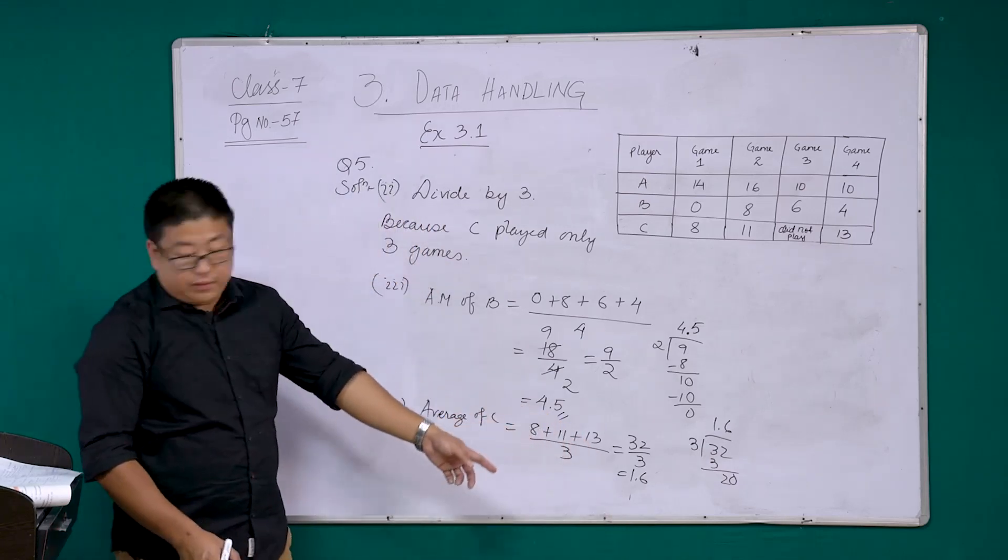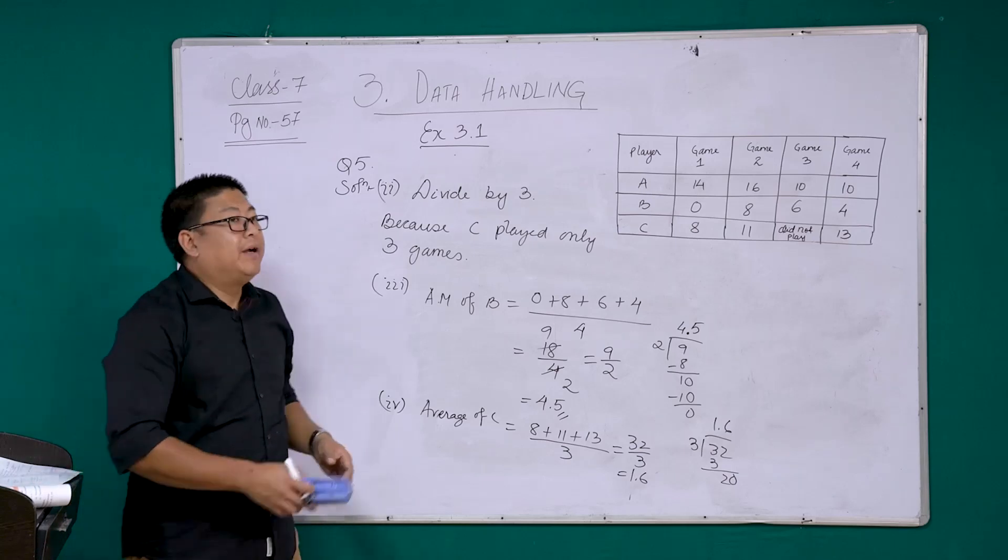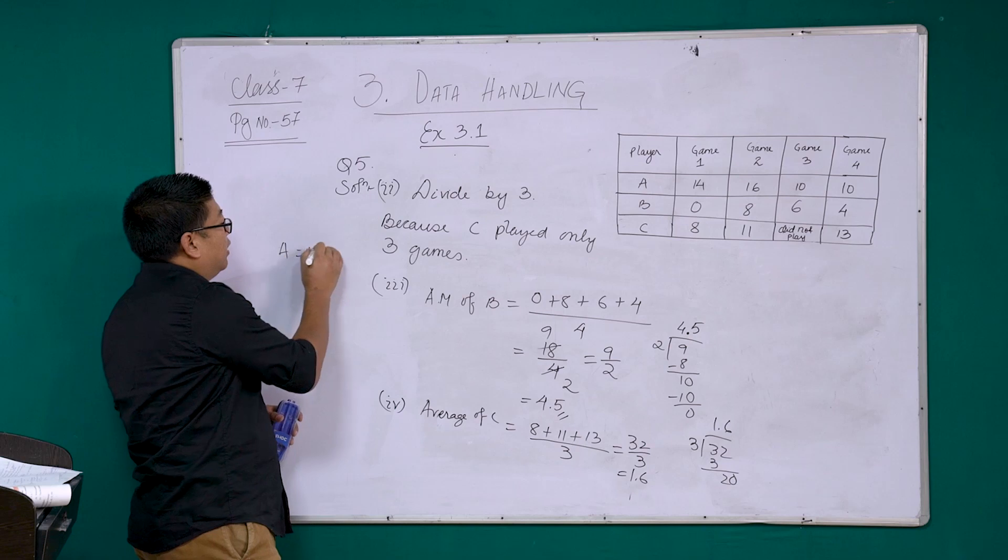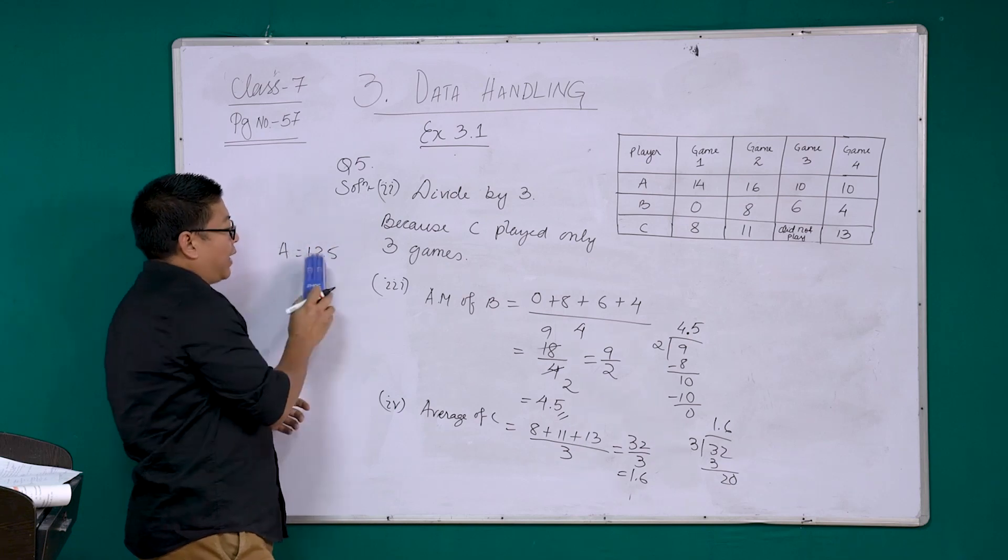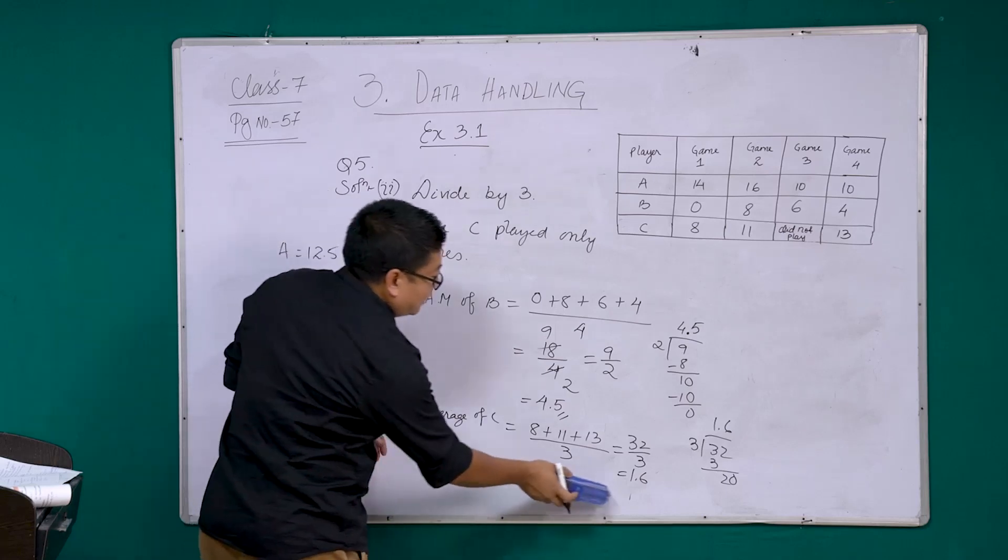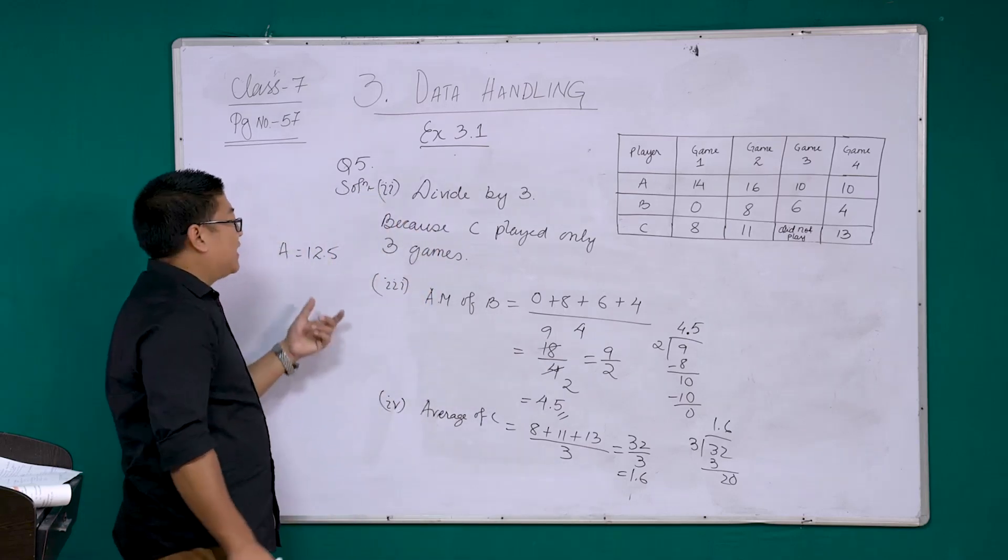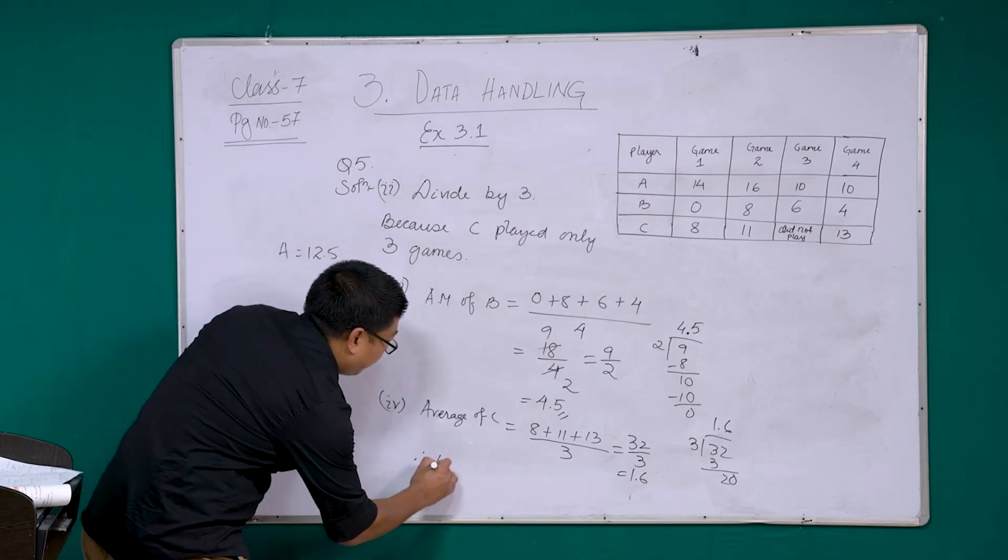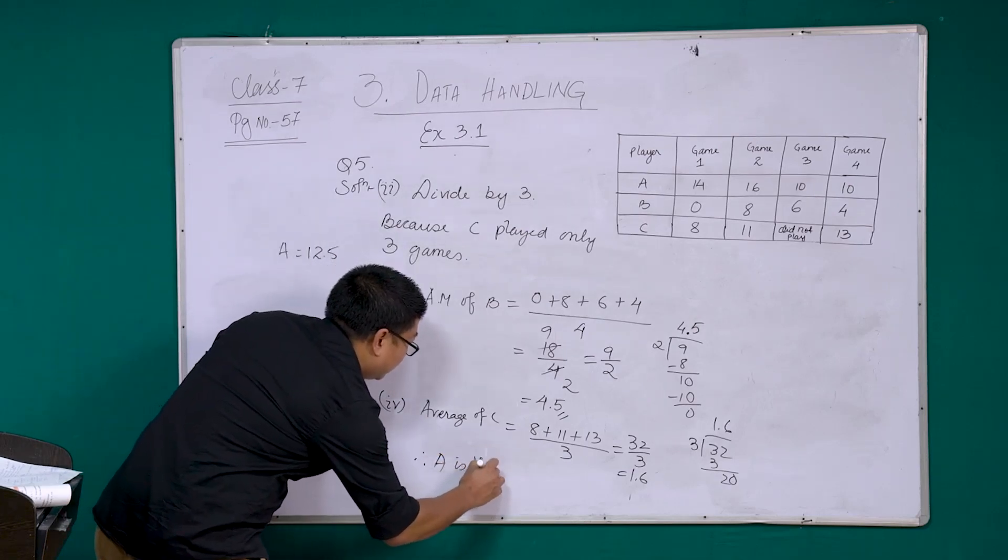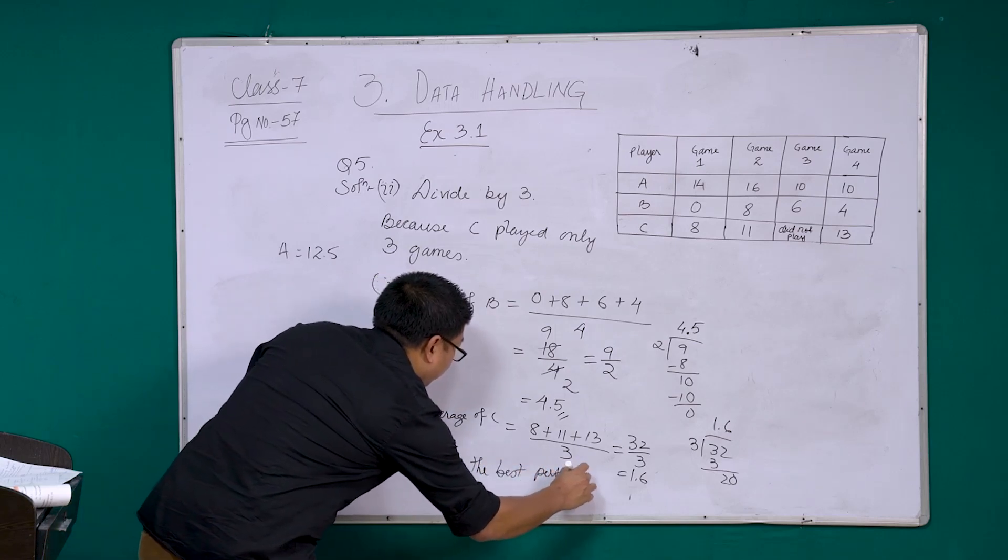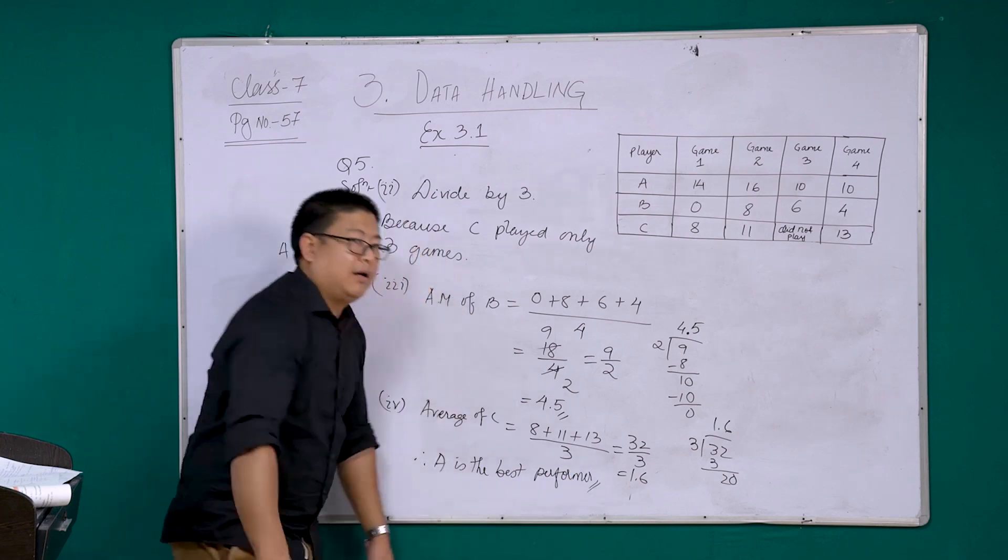Now if you compare the averages of A, B, and C. A, we got 12.5. B, we got 4.5, and C, we got 10.6. We can easily understand that A is the best performer. So therefore, A is the best performer. I hope this is clear.